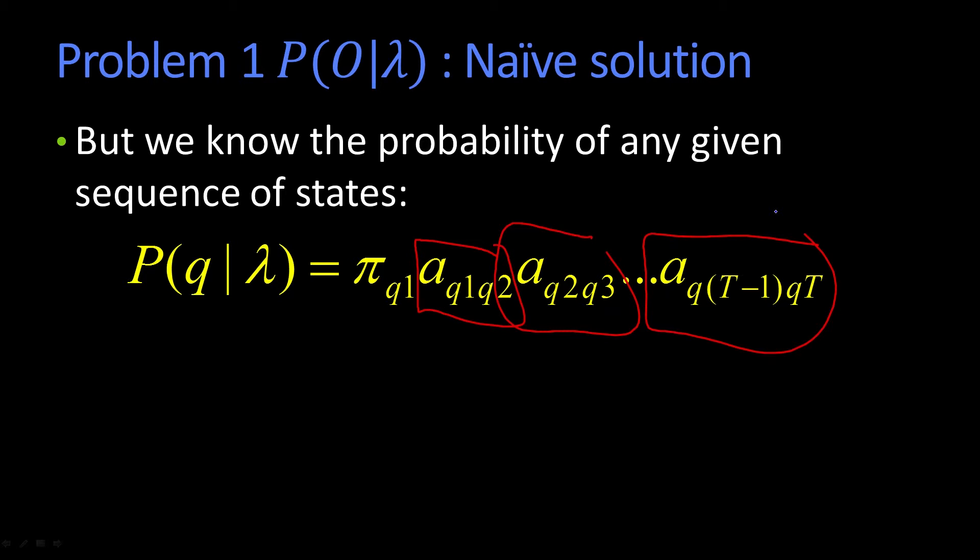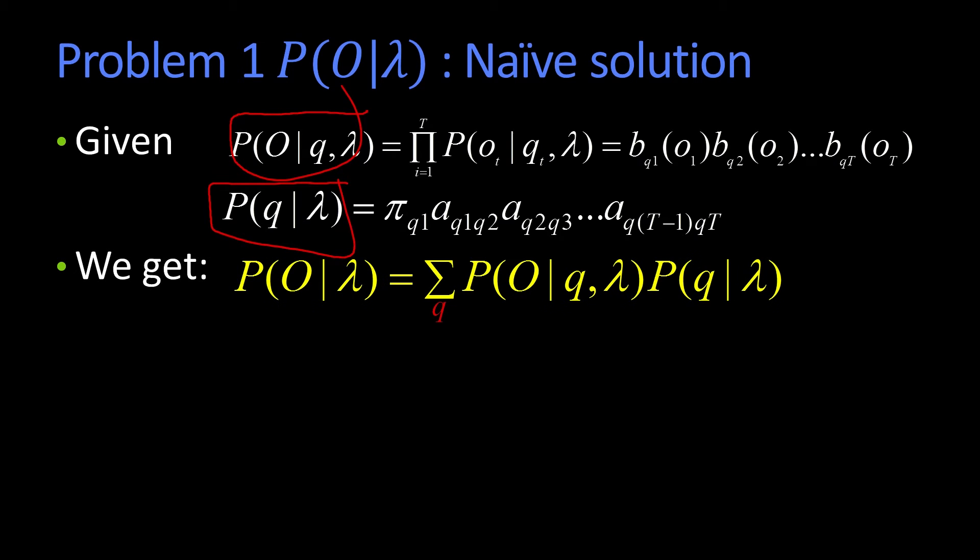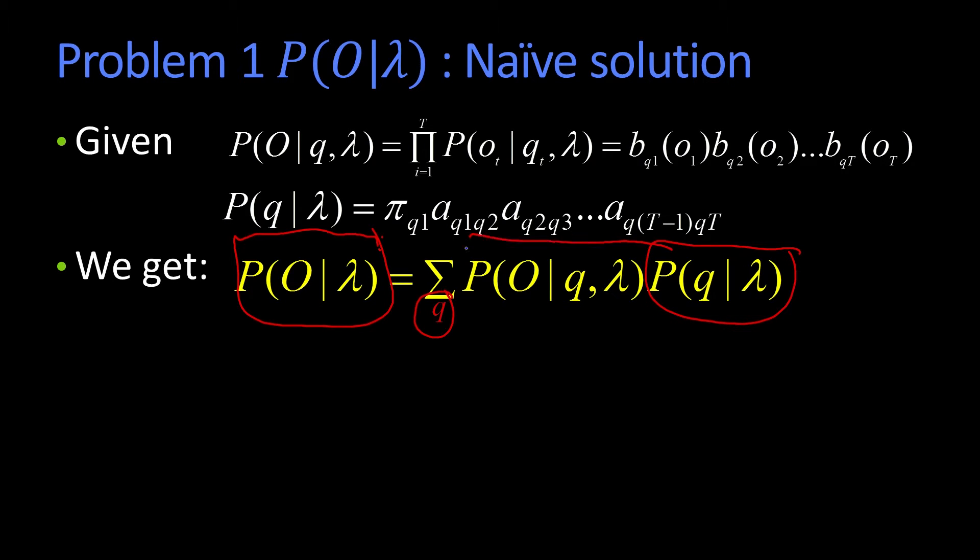Well, you say, in that case, I can do the following. Given that I can compute the probability of an observation sequence given a state sequence, and given that I can compute the probability of any given state sequence, well then obviously, we can compute the probability of getting that output sequence by just summing over all the different state sequences. Taking the probability of the state sequence times the probability of the observation given the state sequence, summed over all the state sequences. You could just do that.